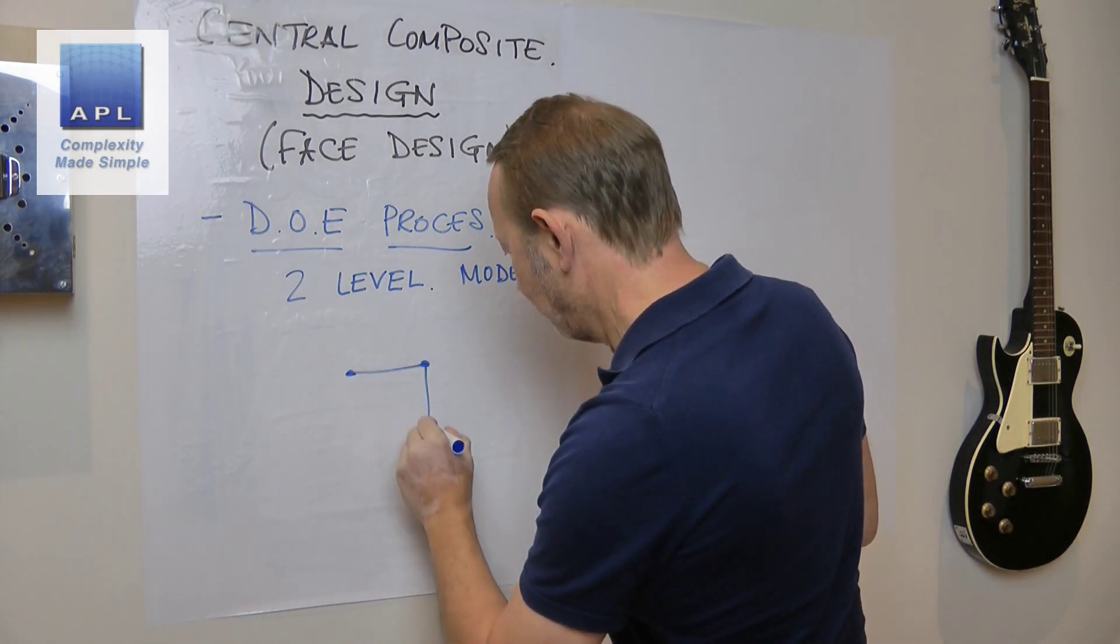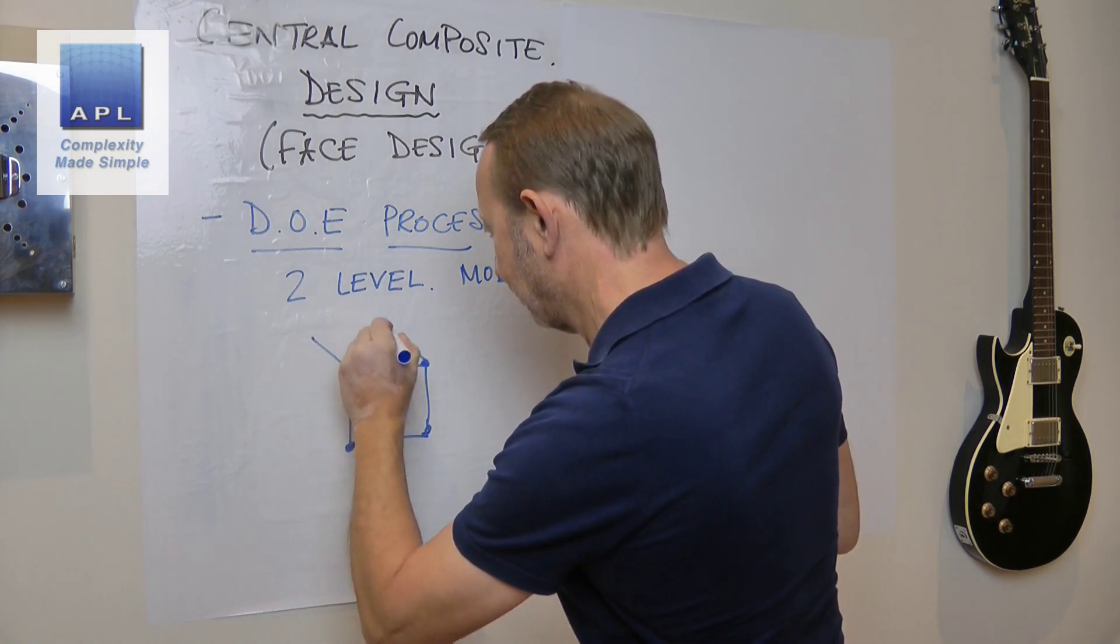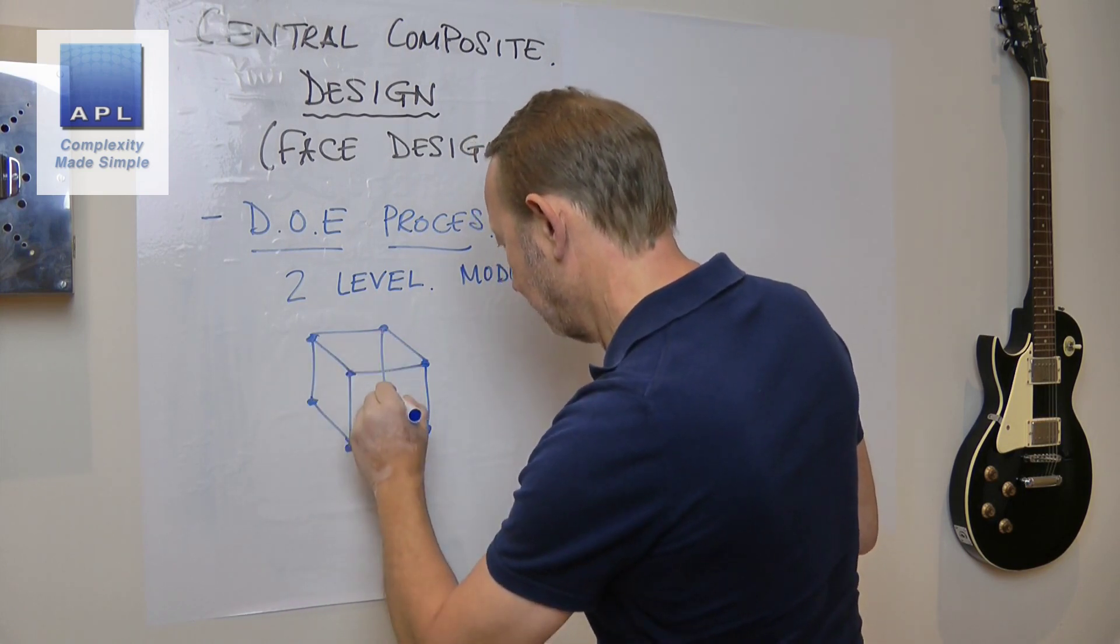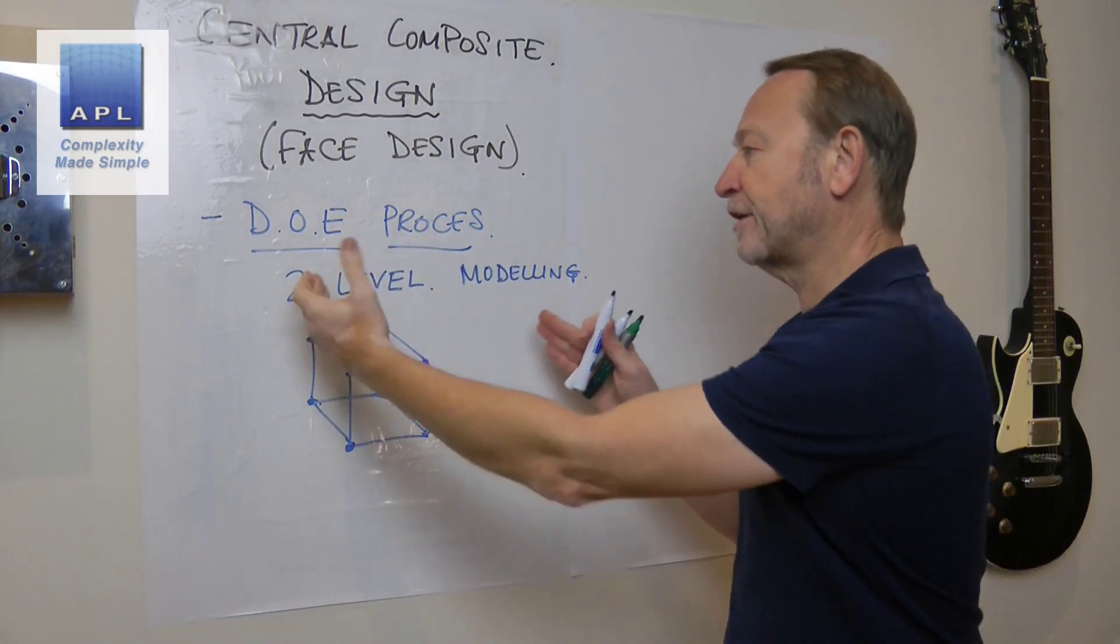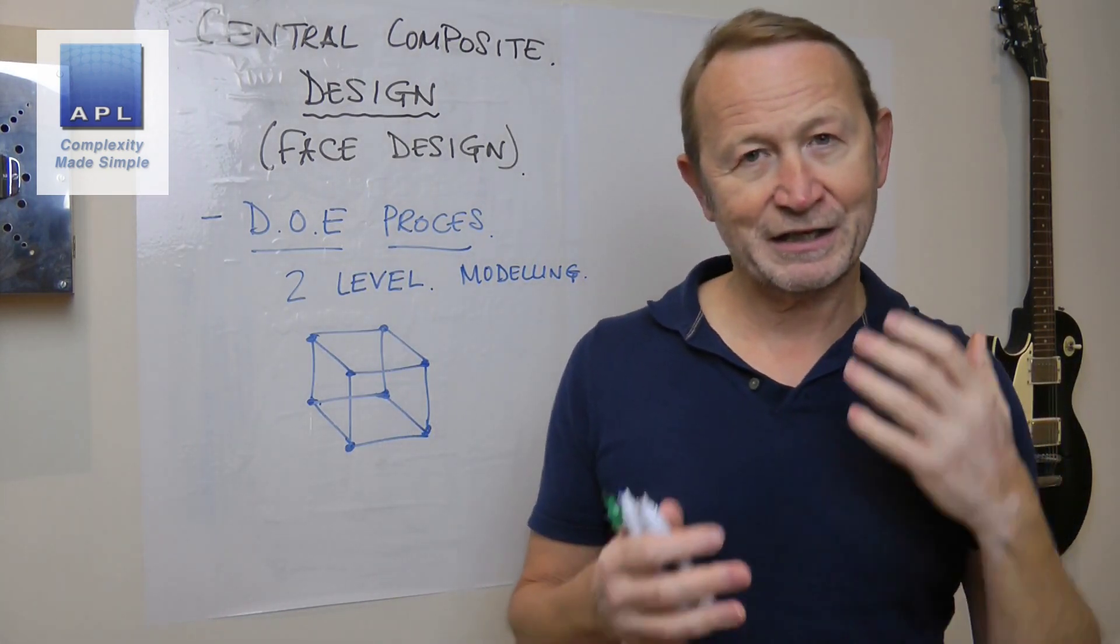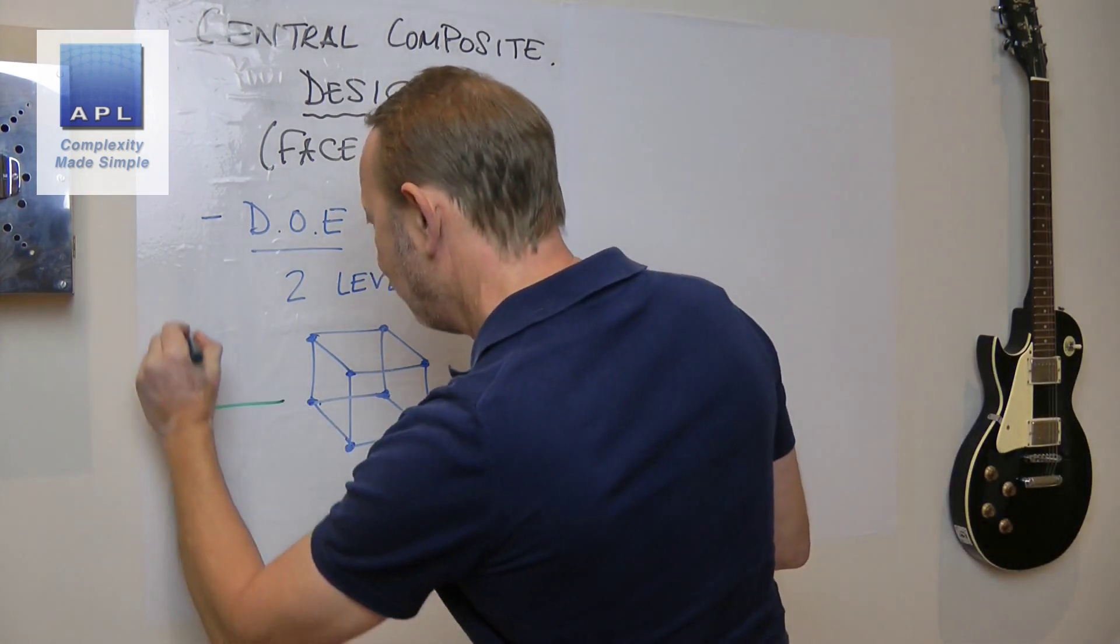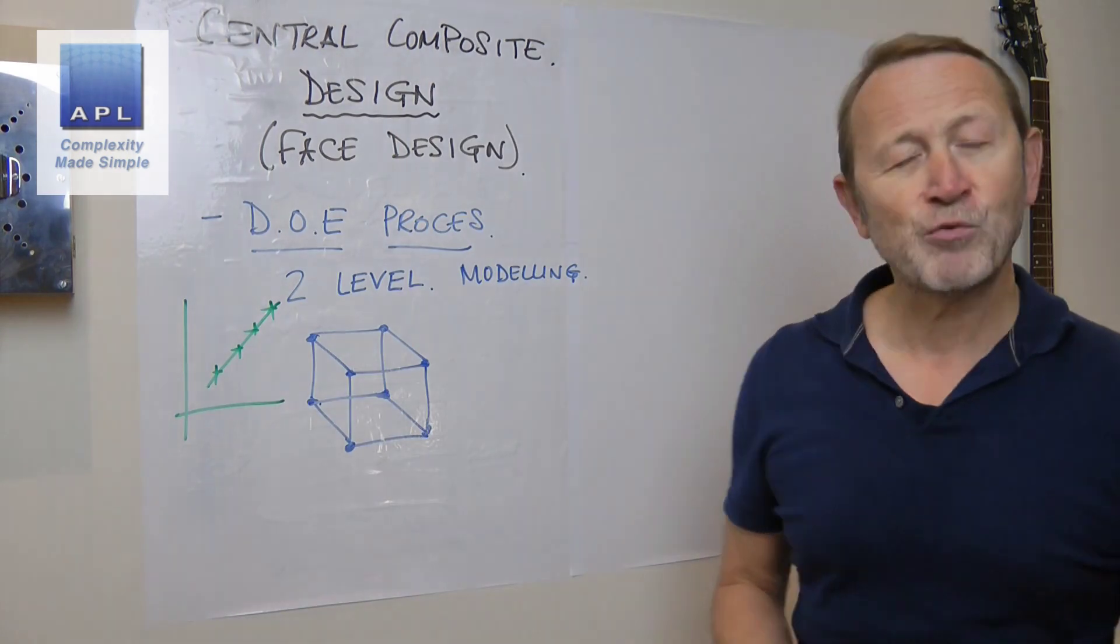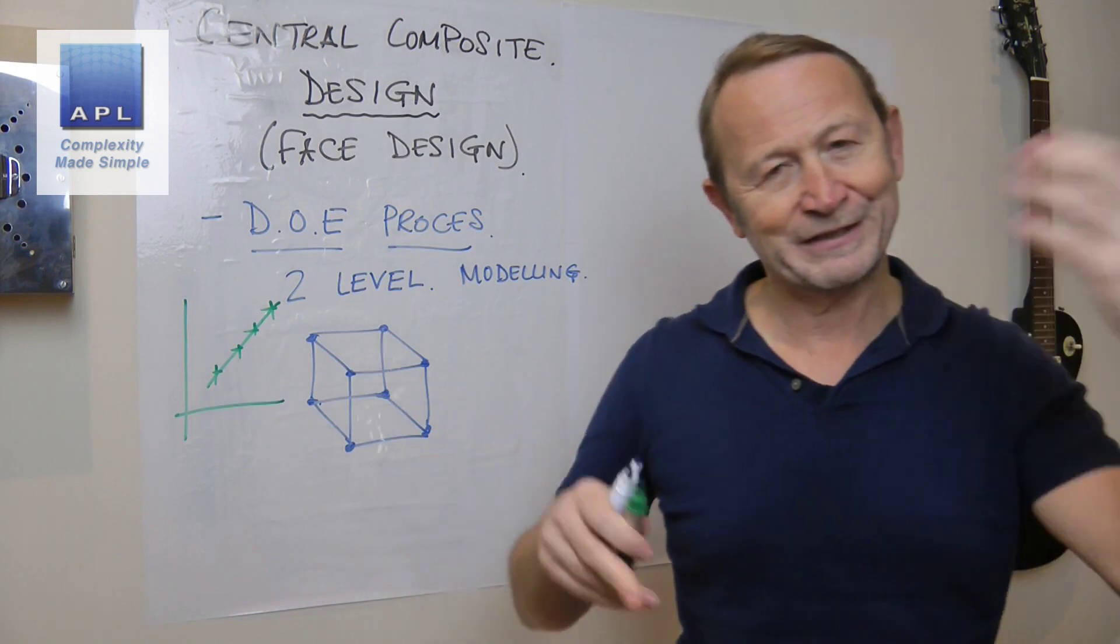So what that means, of course, is if we're doing a three factor two level DOE we are just testing at the eight corner points. Now that people often think that the two level DOE is too simple to model their process, because they think it's linear we're going to create linear models. And of course, what they always think is, if my process looks like this, I would already know that that's way too simple. My problem can't be linear can't be a two level problem.